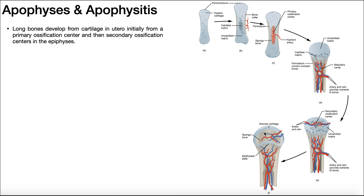The other really important thing to understand is that in bone development, we initially start off with a primary ossification center in the center of what will become the long bone — in the shaft. Then later on, we end up with secondary ossification centers. The way bone development is typically taught is that you have two secondary ossification centers in long bones: one on the proximal end and one on the distal end.